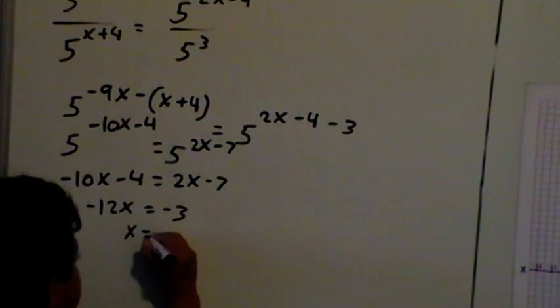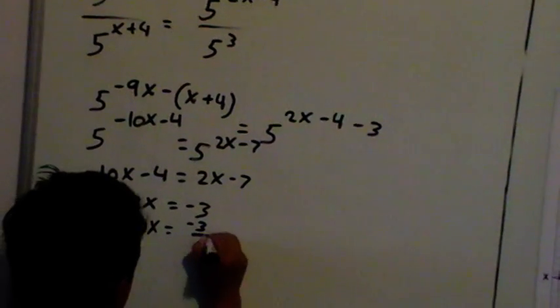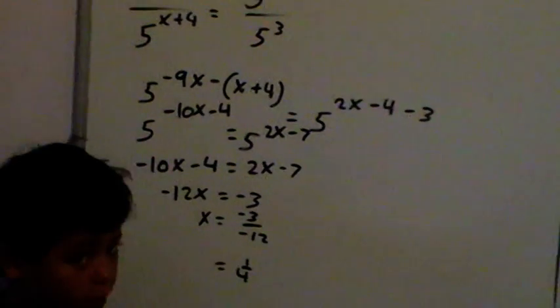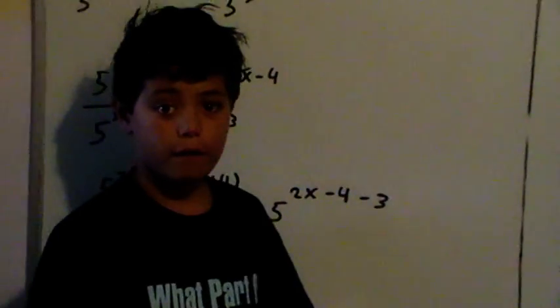And now I'll solve for x, which is minus 3 over minus 12, which is 1 over 4. Now I'll operate.